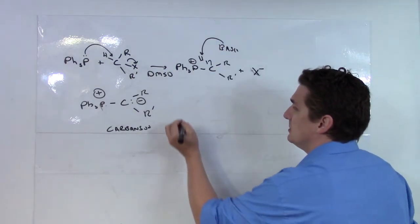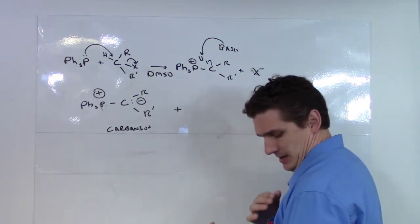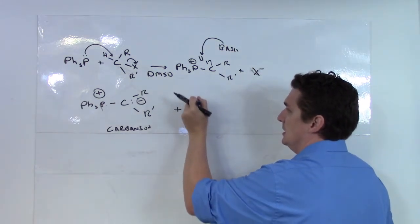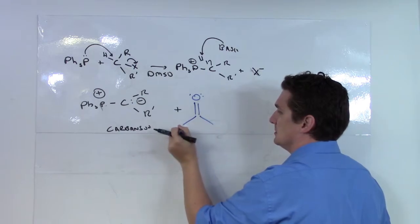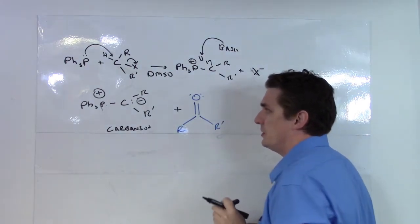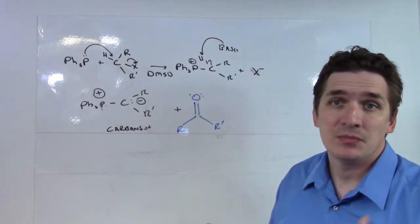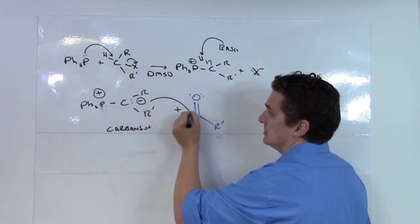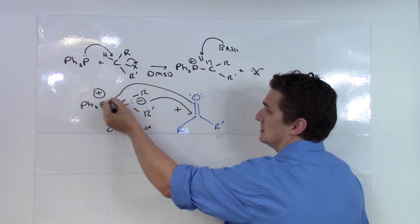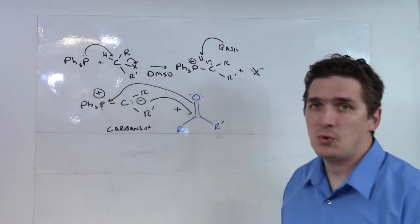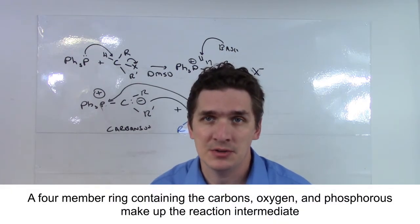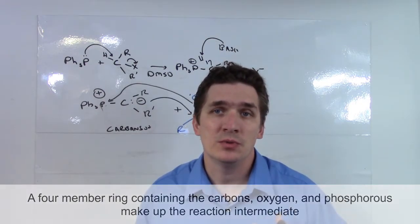We can take our Wittig reagent, and to make it a little bit easier to see, I'm going to draw it in blue and react it with a carbonyl complex. Now, let's trace the positives and negatives. Part of the reaction here is the phosphorus forming a bond with the oxygen, the carbon forming a bond with the other carbon, in what's called the Wittig intermediate.